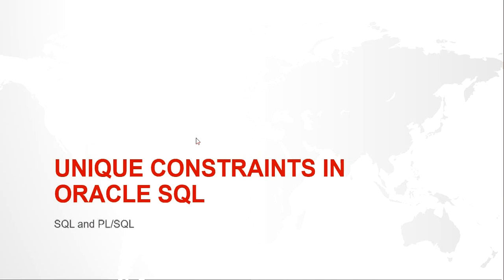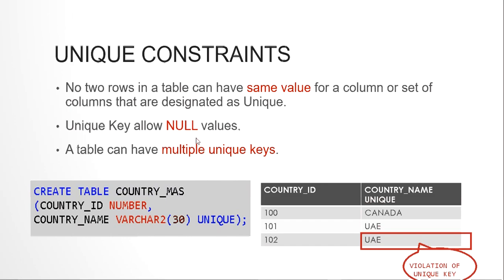Hello guys, my name is Kishan and in this video we are going to look at unique constraint in Oracle SQL. In our previous video we looked at constraints, not null, and check constraint. A constraint helps us set rules and regulations for our tables to maintain data integrity and accuracy. Unique key is one of them — whenever a column or set of columns is defined as unique, you can never enter duplicate values, meaning no two rows can have the same value for that column or set of columns.